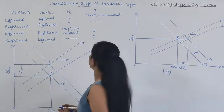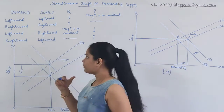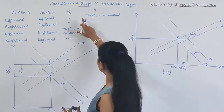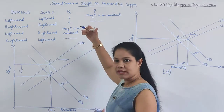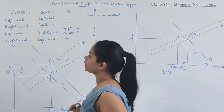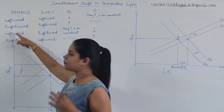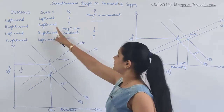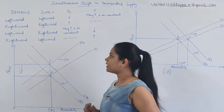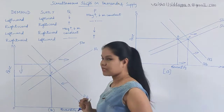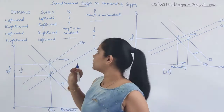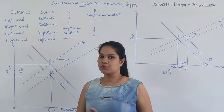In simultaneous shifts in demand and supply curves, there are four possible cases. First, demand shifts left and supply also shifts left — same direction; quantity decreases and price may increase, decrease, or be constant. Second, demand shifts right and supply also shifts right. Third, demand shifts left and supply shifts right — opposite directions. Fourth, demand shifts right and supply shifts left. So what will happen to quantity and price in each case? We'll see that with diagrams.